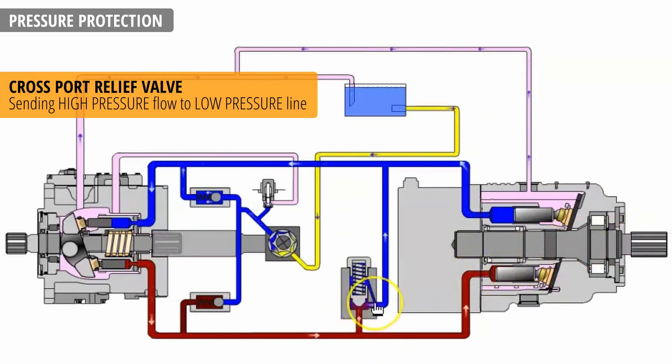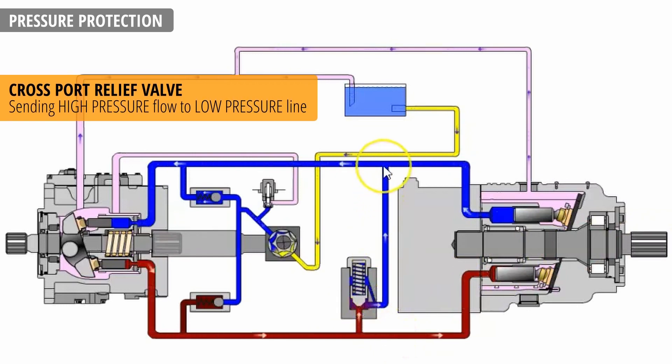In case the pressure gets too high, this valve is going to dump it from high pressure line into low pressure line instead of sending it into the tank. This is why it's called a cross port relief valve.